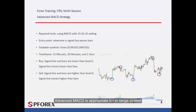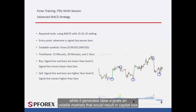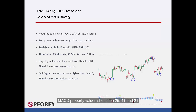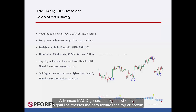Advanced MACD is appropriate for a range market, while it generates false signals on volatile markets that would result in capital loss. MACD property values should be 25, 41, and 21. Advanced MACD generates signals whenever the signal line crosses the bars towards the top or bottom.